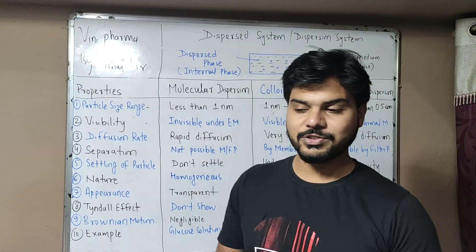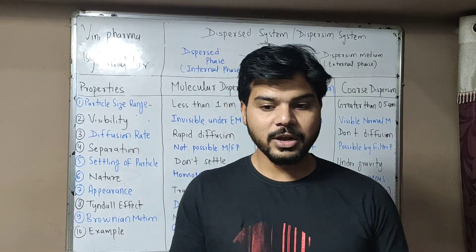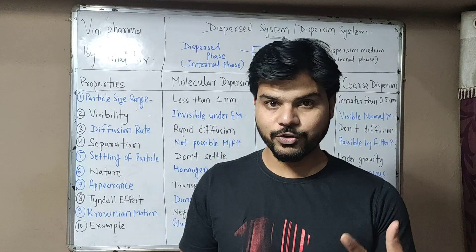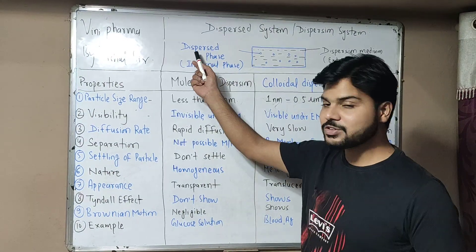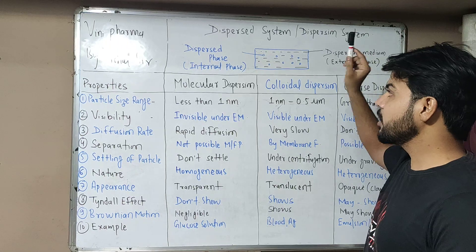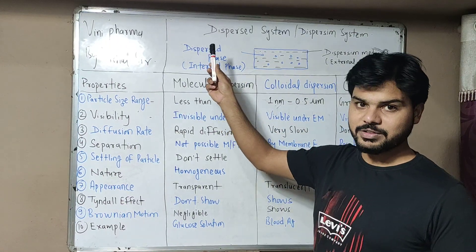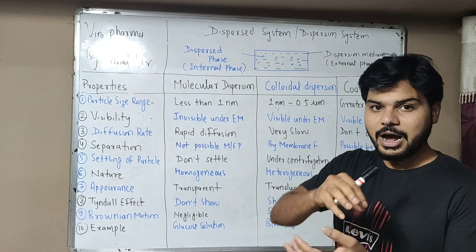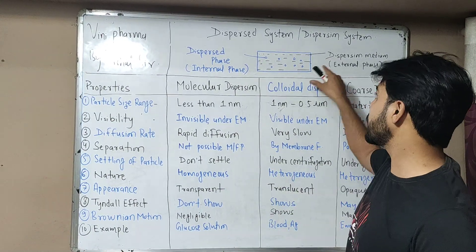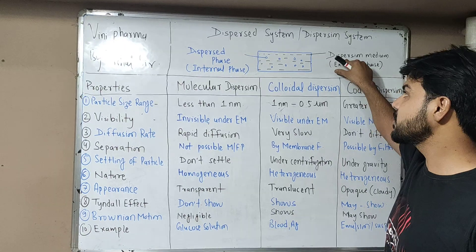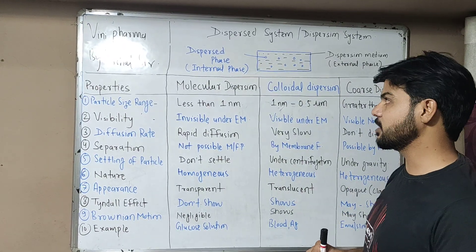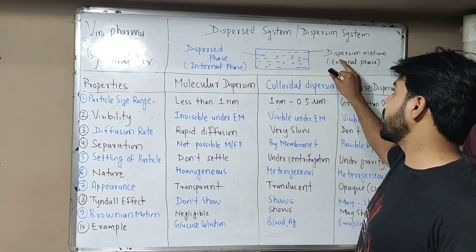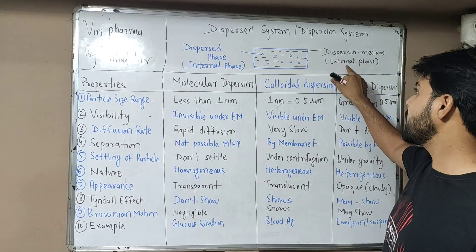So what is a dispersed system? A dispersed system contains two phases: one is the dispersed phase and the second is the dispersion medium. It is a system in which particulate matter — meaning particles — are distributed throughout the dispersion medium. The dispersed phase is called the internal phase and the dispersion medium is called the external phase.